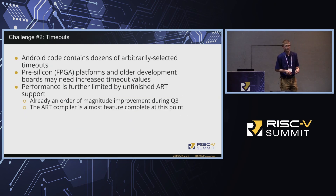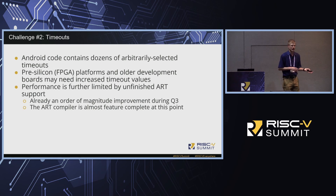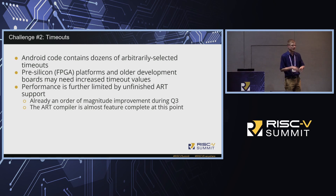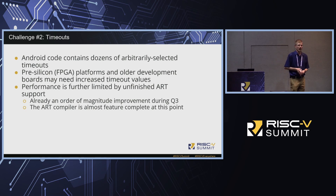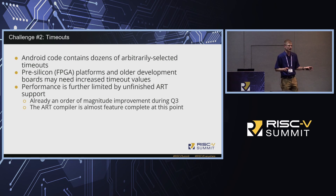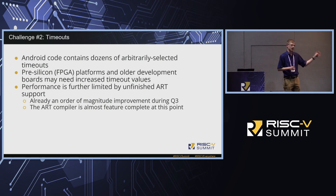The second challenge is that especially when running on a pre-silicon emulation platform, the hardware is really slow — and some of our older development boards are also pretty slow. Android code contains a bunch of arbitrarily selected timeouts based on existing baseline hardware, and sometimes those aren't big enough when running on really slow hardware. When we started, ART performance was an order of magnitude worse, so we hit a lot of timeouts. That's been mostly resolved now, but there are still cases — especially on emulation — where we need to increase those timeouts.